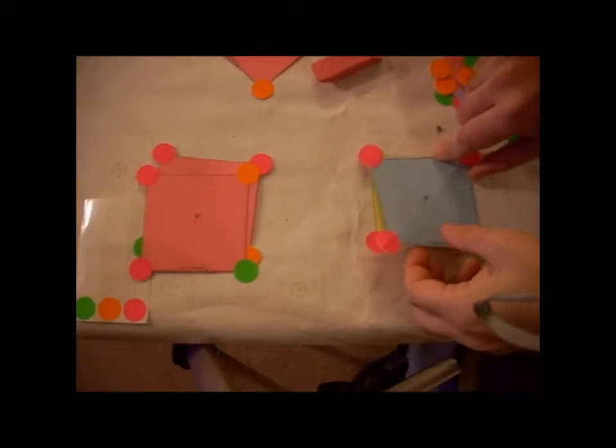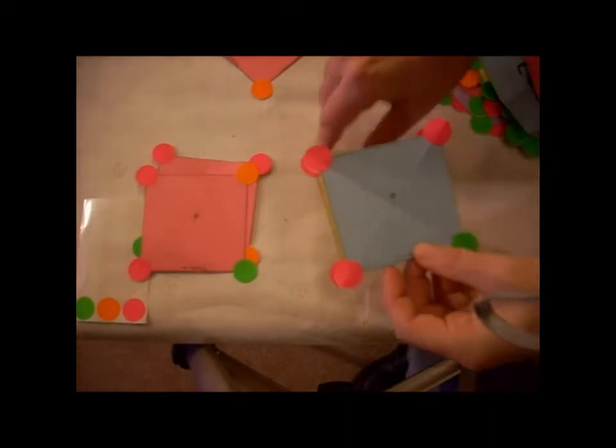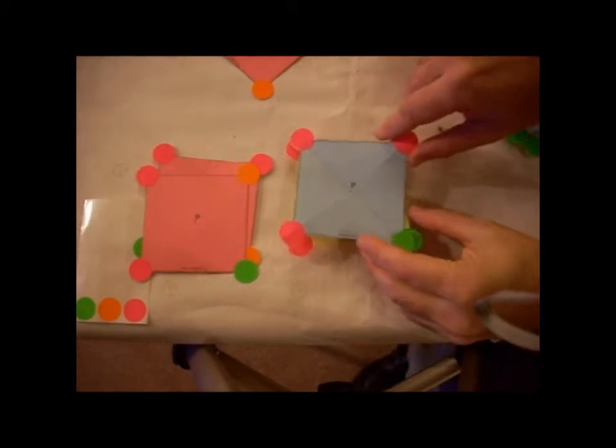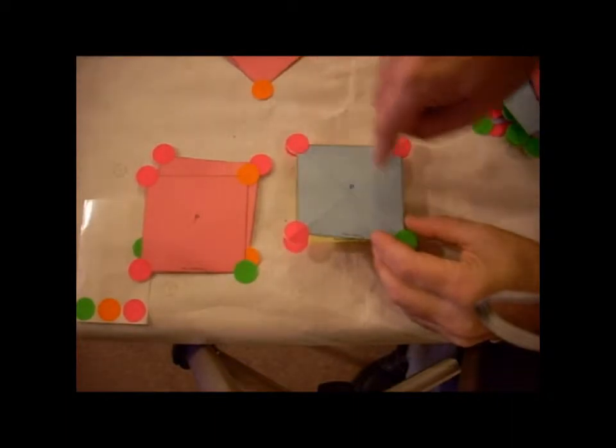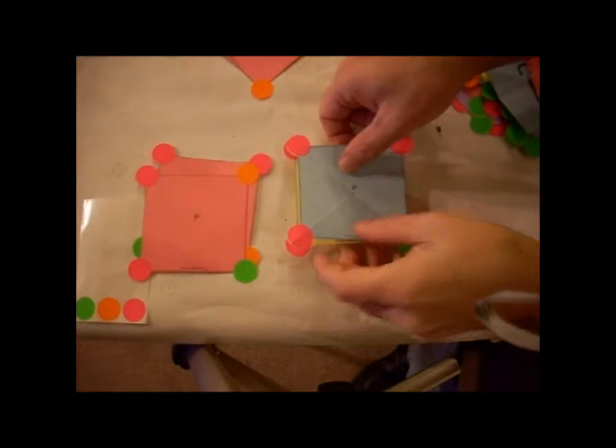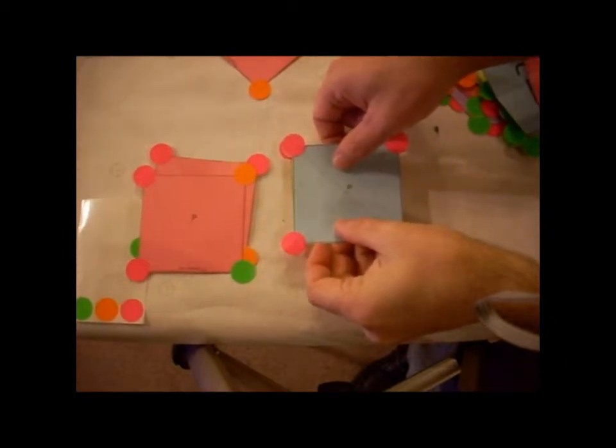Our next molecule to take a look at is, again, a square planar-style compound. But here we have two different substituents, three of one type and one of another. So we want to see what the symmetry operations that are present in this particular molecule.